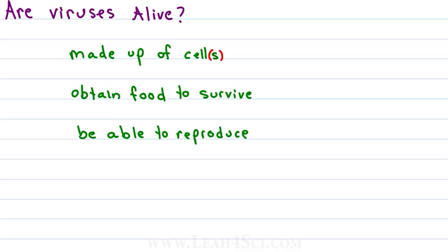The argument for viruses not being alive is: first of all, a virus is not made out of cells. As we'll see in a moment, a virus is simply genetic information surrounded by a protein coat. Something living must be able to obtain food to grow and survive — viruses don't eat. The cells that replicate the viruses have to eat; those cells are alive, but the virus that infects the cell doesn't rely on food. And finally, something living must be able to reproduce and have offspring, and viruses definitely cannot reproduce.